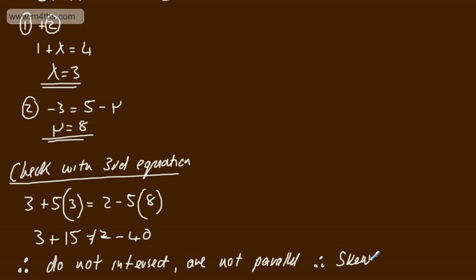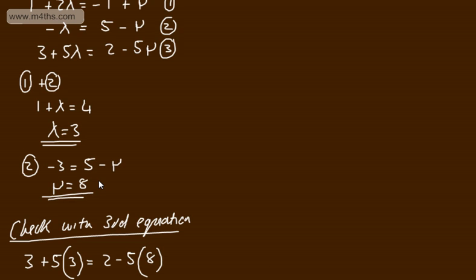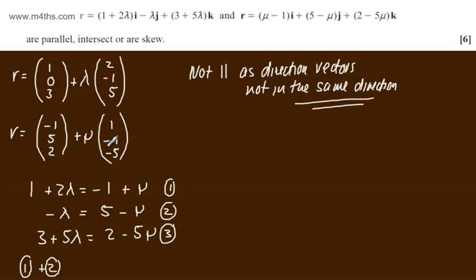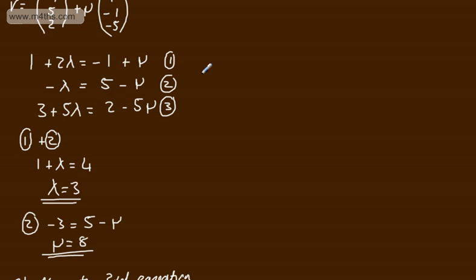We would have to show essentially that this equation was satisfied by λ and μ if they were going to intersect. So that's one way of doing it. Looking at the direction vectors and showing that these are not multiples of one another, then setting up simultaneous equations.